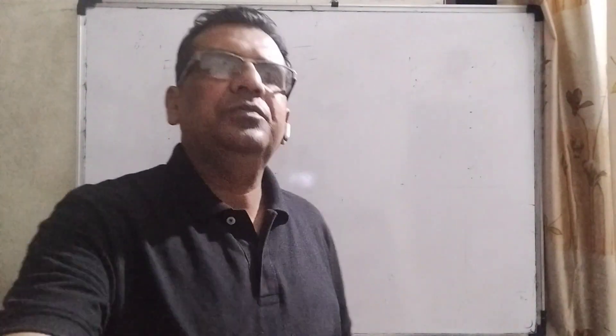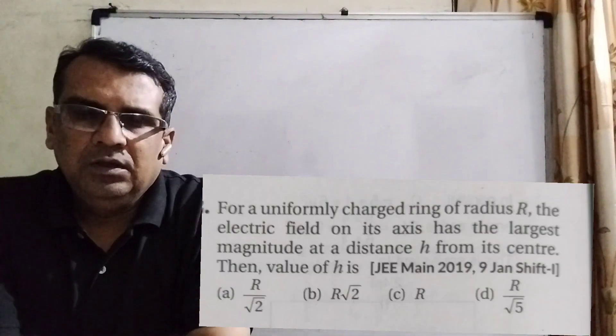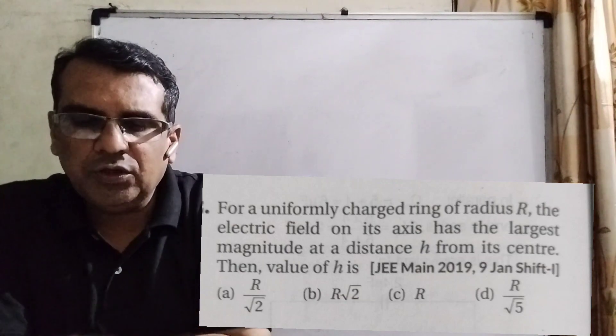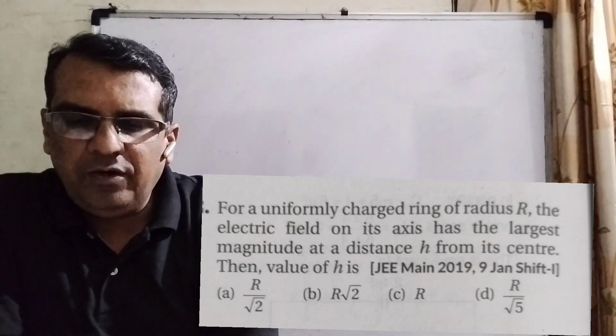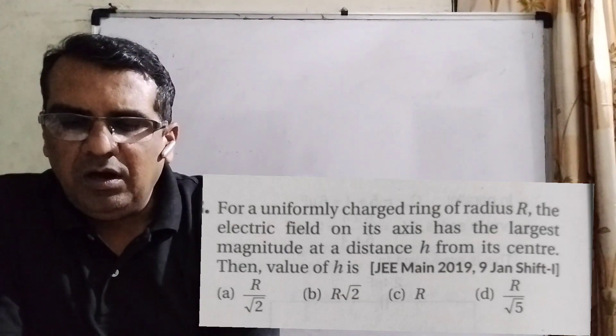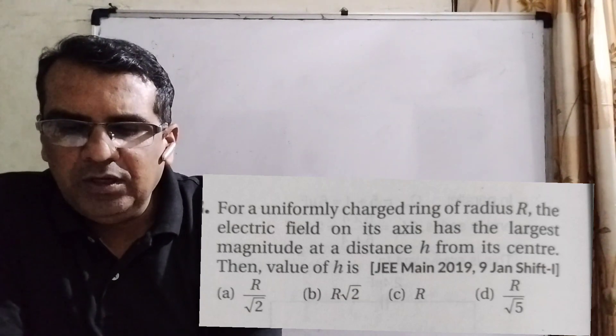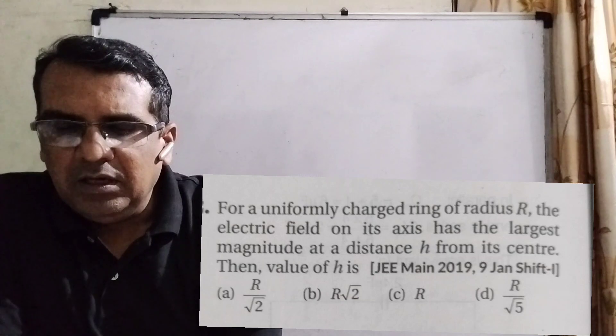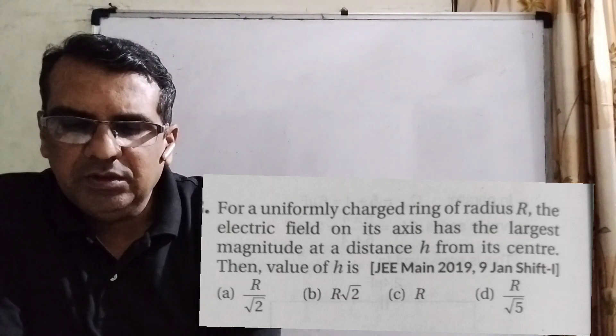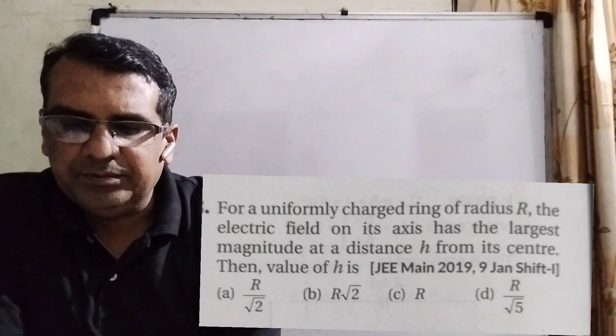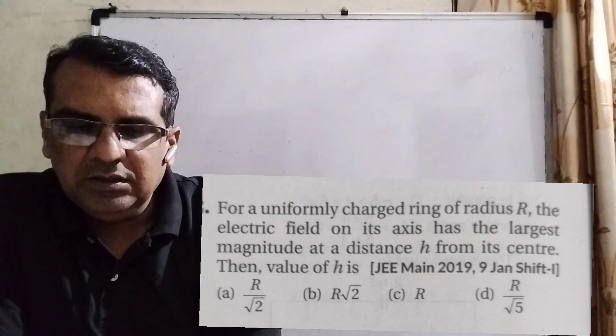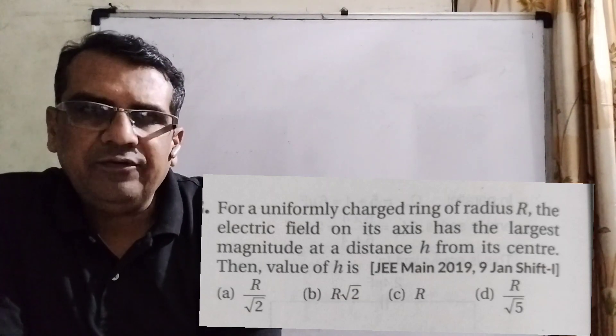Okay, thank you. Let's see what the question says. For a uniformly charged ring of radius R, the electric field on its axis has the largest magnitude at a distance h from its center. Then the value of h is: